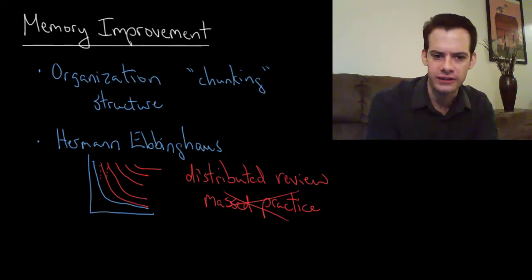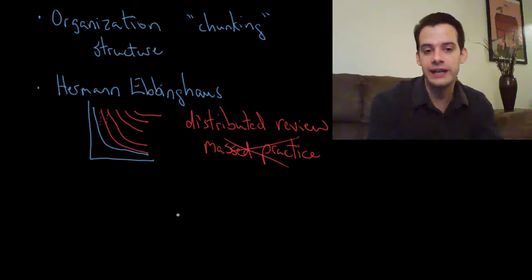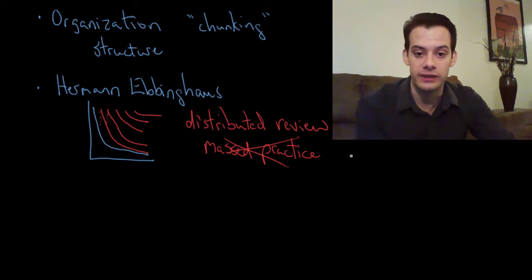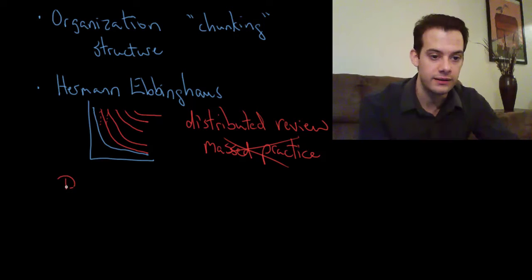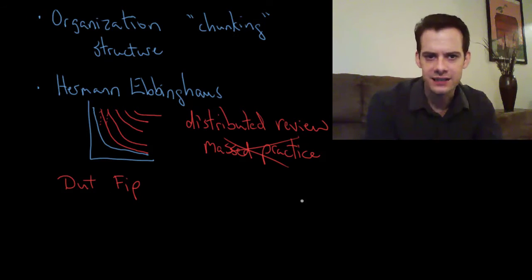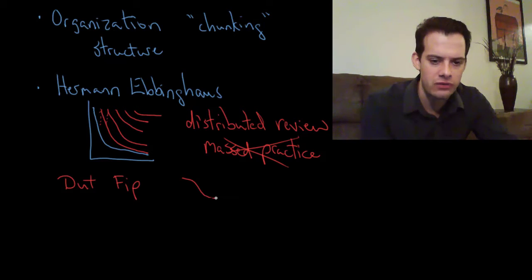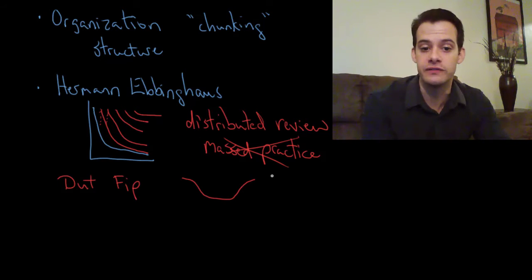Now I want to talk about another thing that Ebbinghaus looked into in his study of these nonsense syllables. He took two consonants and put a vowel in between them. So he'd end up with words like dut or fip. He had these nonsense syllables and tried to remember long lists of them. What he found when he looked at these lists is that his recall was good for the first few words on the list and then it dropped, and he was most likely to forget the ones in the middle, and then the ones near the end of the list his recall improved.